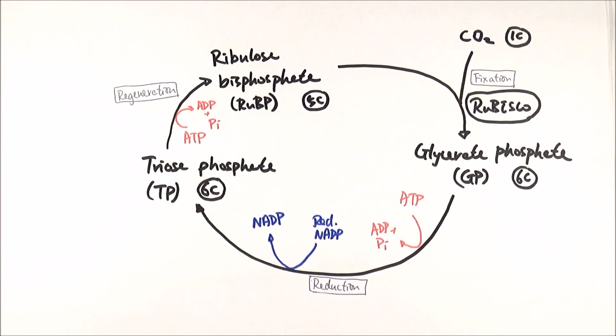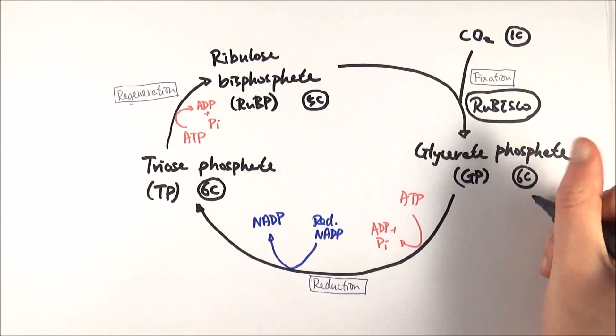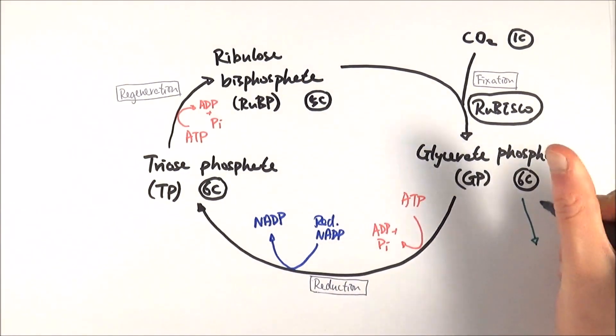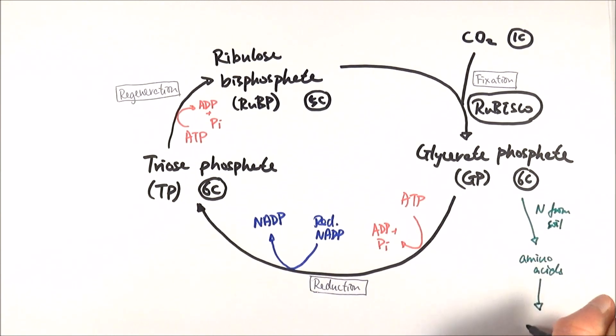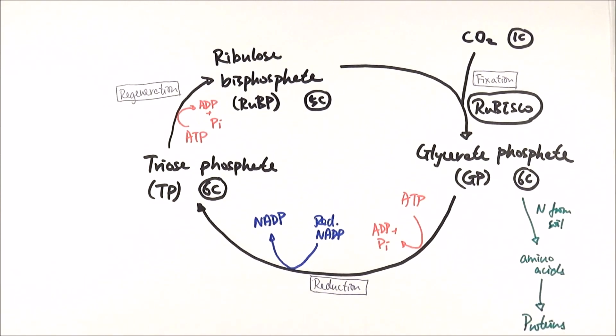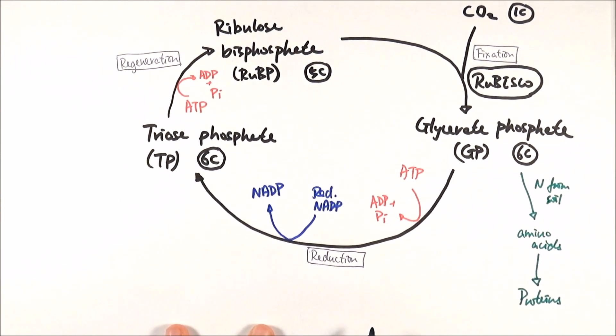So for GP, what it can do, first of all, is to make amino acids. And this requires nitrogen from the soil as well. Hence why when we plant things, we need to make sure they have fertilizers in it. And of course, as we know, amino acids can then go on to be made into proteins, which will form the basic structure of the plants, or even to make different sorts of enzymes.